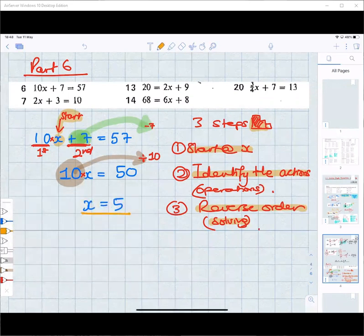And that's, you've literally followed the three steps with a dot. You've started at the X. You've identified the actions. Move the actions in reverse order. Bob is your uncle, Jane is your auntie. That question is done. All right. Let's have a look at another question. Let's have another student.